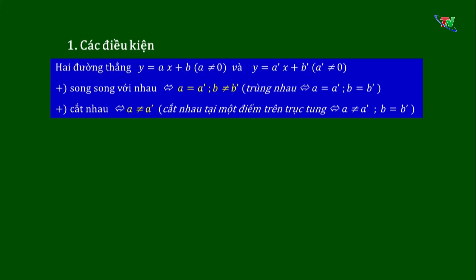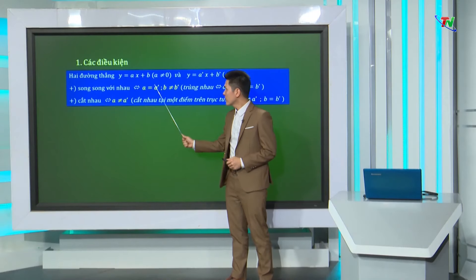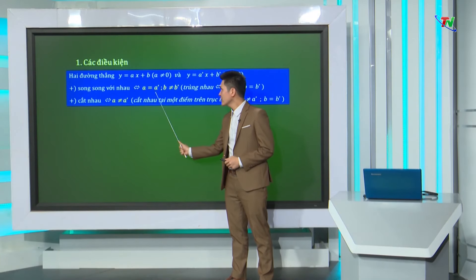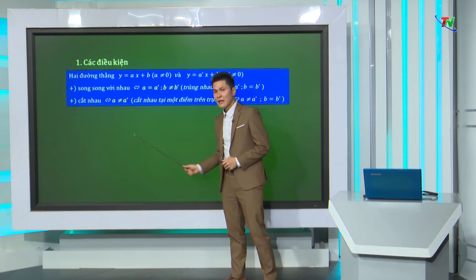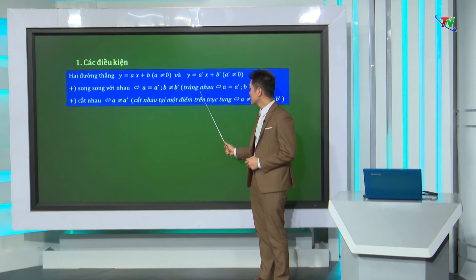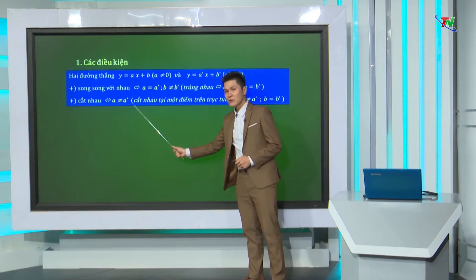Đặc biệt, 2 đường thẳng cắt nhau tại 1 điểm trên trục tung khi và chỉ khi A khác A' và B bằng B'. Nếu 2 đường thẳng song song với nhau thì A bằng A', B khác B'. Và ngược lại, A bằng A', B khác B' thì ta có 2 đường thẳng song song. Các trường hợp trùng nhau và cắt nhau, ta cũng xét tương tự.